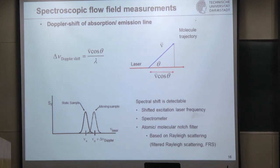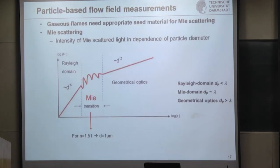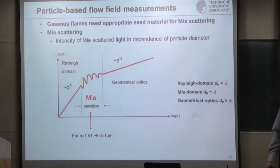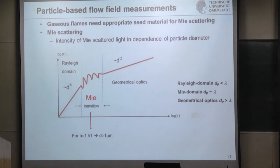For particle-based methods, you put seeding particles into the gaseous flow and take advantage of Mie scattering. Mie scattering occurs when the wavelength is on the order of the diameter of the particles — so for visible light around 1 micron, we are using micron-sized particles. The particle that is seeded to the flow should follow the flow ideally. To minimize slip, you want the normalized velocity difference between fluid and particle to remain below 1%. From that criterion, you can calculate a cutoff frequency to which the particles can follow — and directly you can see: if you have a larger diameter, the cutoff frequency will go down.